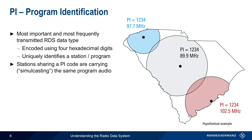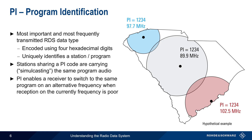The use of PI enables a receiver to automatically switch frequencies, or retune, when reception on the current frequency is poorer. For example, an RDS radio traveling along this route could automatically change received frequency and stay with the same program as it moves between coverage areas.